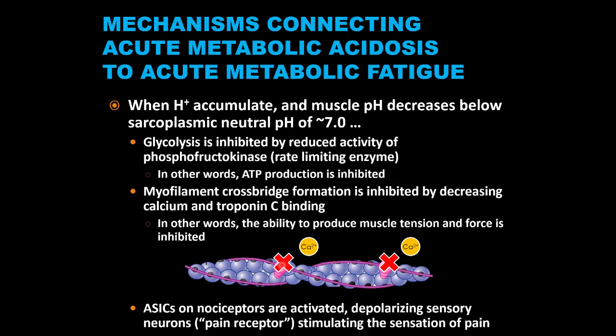Tropomyosin is removed off the binding sites by troponin, and troponin knows to remove tropomyosin when calcium binds to it. If calcium can't bind to troponin, tropomyosin can't be removed, and myosin cannot form a cross-bridge with the thin filament, interfering with the sliding filament process and thus muscle contraction. The calcium binding sites on troponin are sensitive to pH, and when pH decreases during post-anaerobic threshold hypoxic situations, the binding potential with calcium is reduced significantly.